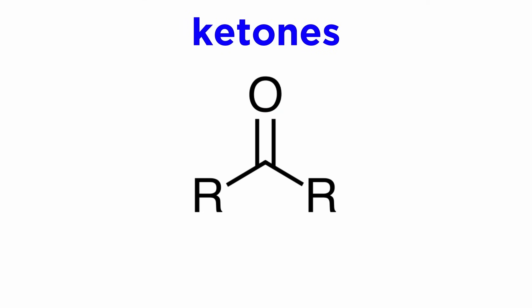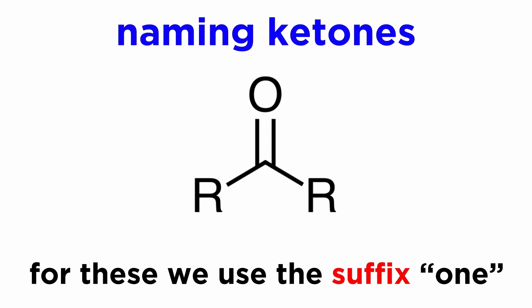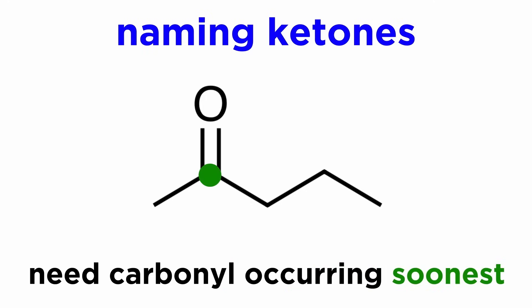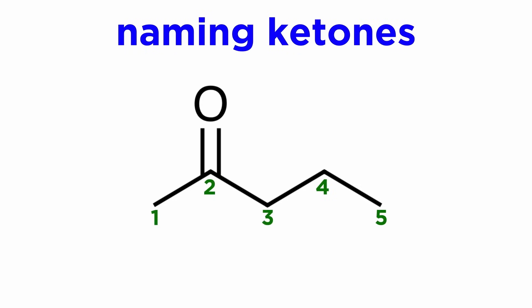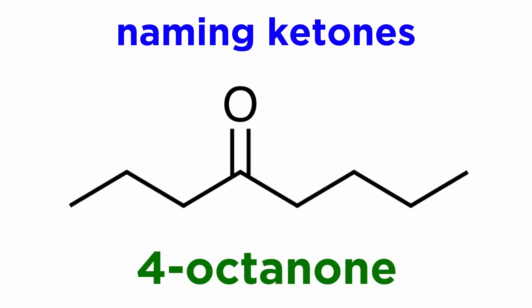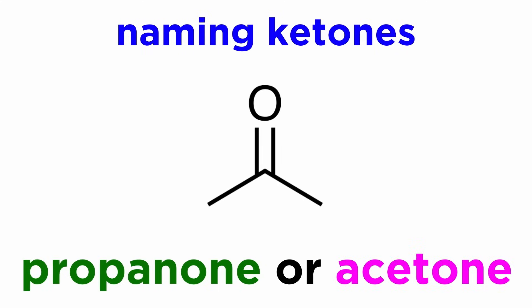Next, let's look at a functional group that is extremely similar to the aldehyde. If instead of having alkyl on one side of the carbonyl, we have alkyl on both sides of the carbonyl, this will be called a ketone. The corresponding suffix will be -one for ketone. Here the carbonyl will be internal to some carbon chain, so we will have to specify its location, and we will number the chain so as to have the carbonyl occurring soonest. Here is a 5-carbon ketone with a carbonyl on the second carbon from the left, so this is 2-pentanone. This is 4-octanone. This is cyclohexanone. Sometimes we will use a common name, like for propanone, which is also known as acetone.